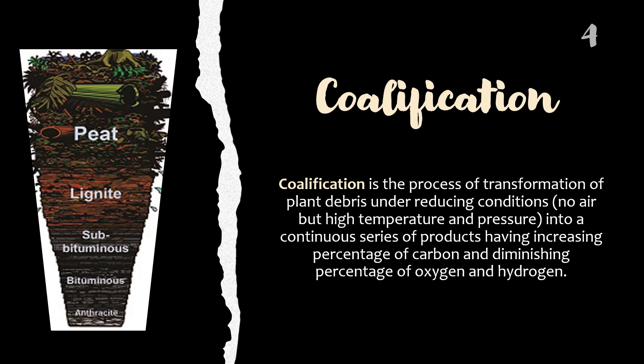The most common classification of coal is based on rank, referring to the degree of coalification that has occurred. Coal rank is a measure of degree of organic metamorphism or degree of maturity of a coal deposit. As you can see in the figure, in the process of coalification, peat is altered to lignite, lignite is altered to sub-bituminous, sub-bituminous coal is altered to bituminous coal, and bituminous coal is finally altered to anthracite.